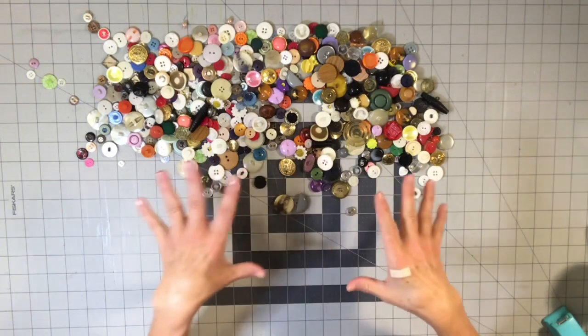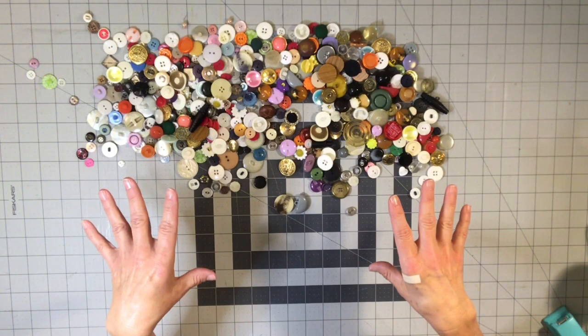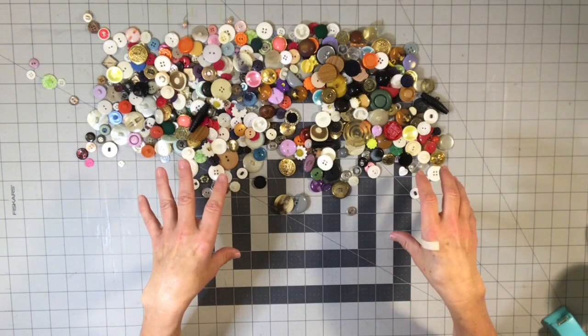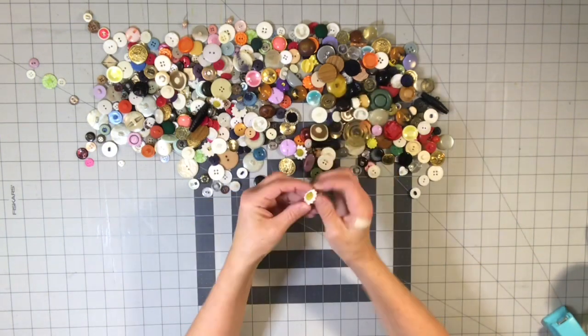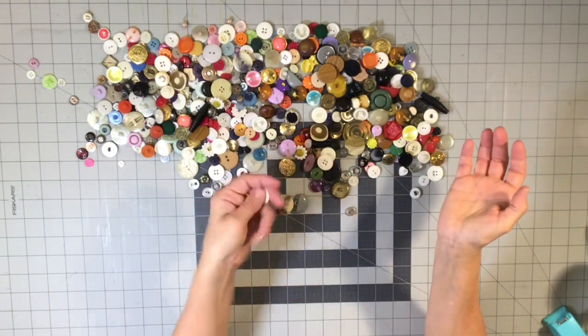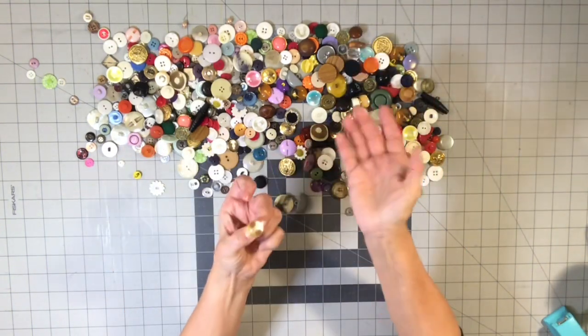We have metal and plastic and probably resin in here. You have metal with fabric-covered buttons. You have two-piece buttons here.